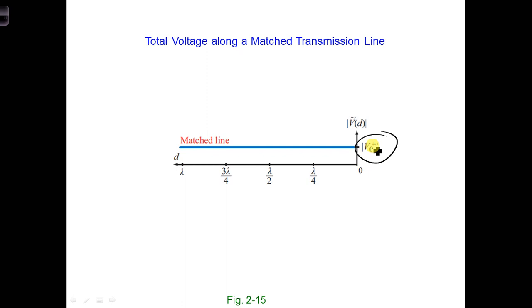Now remember, the voltage varies sinusoidally in time. It's not constant at V0+, and the voltage phasor magnitude is constant, V0+.